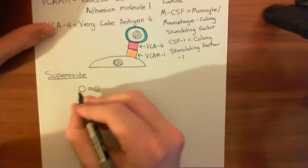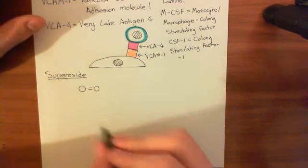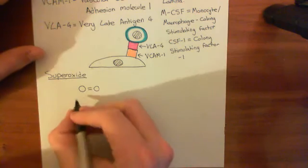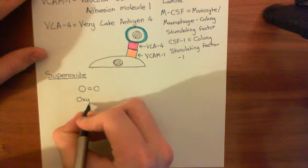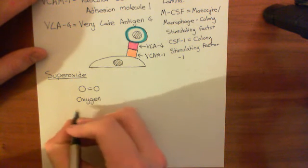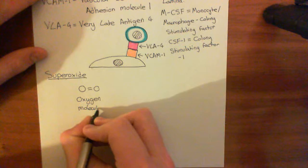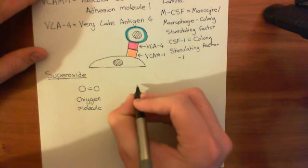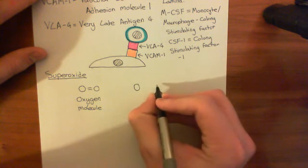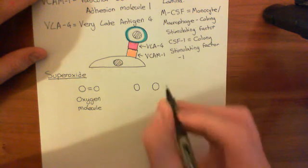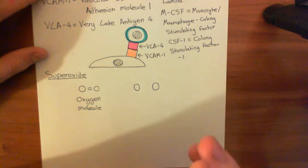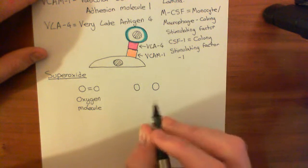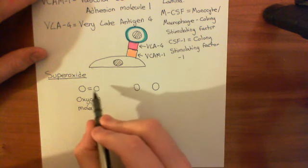So let's draw the dot cross diagram for this oxygen molecule, and then try and understand what superoxide is. So this is the oxygen molecule here. Right. So the dot cross diagram then for it. Each oxygen atom has six electrons in its outer shell, so it needs to gain two more.